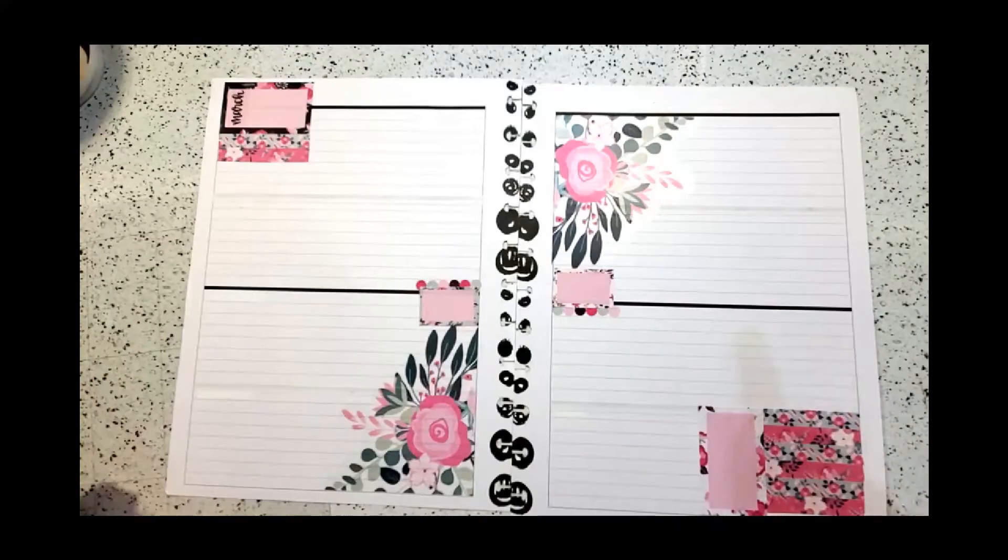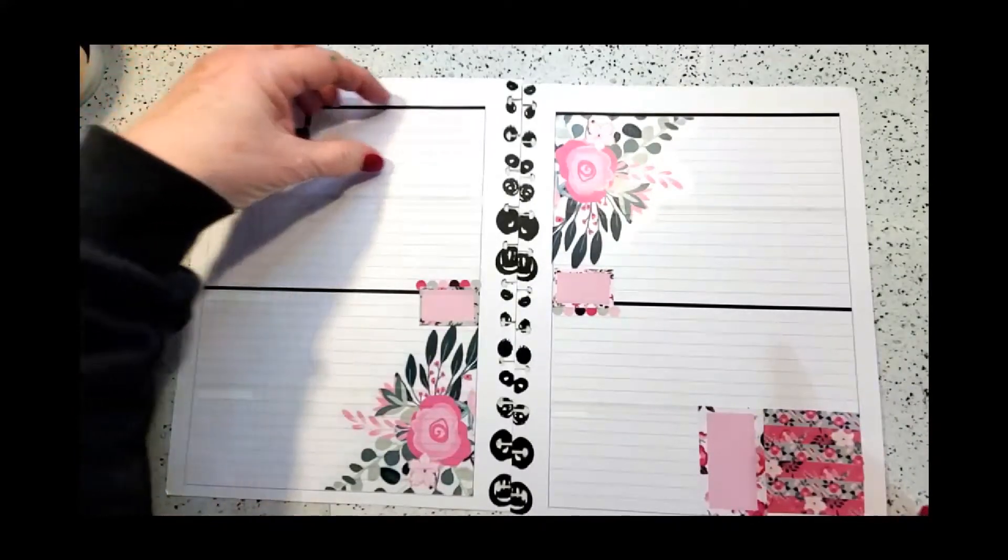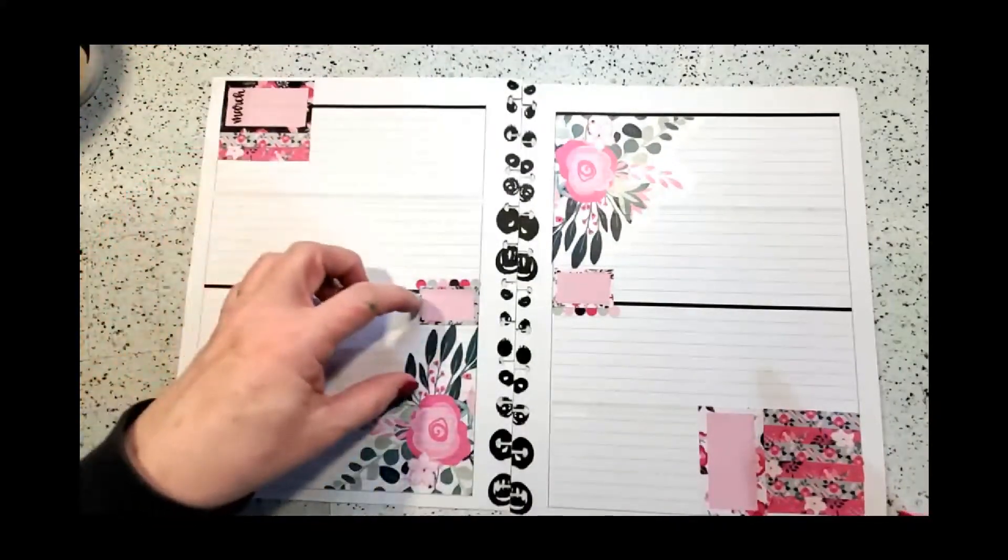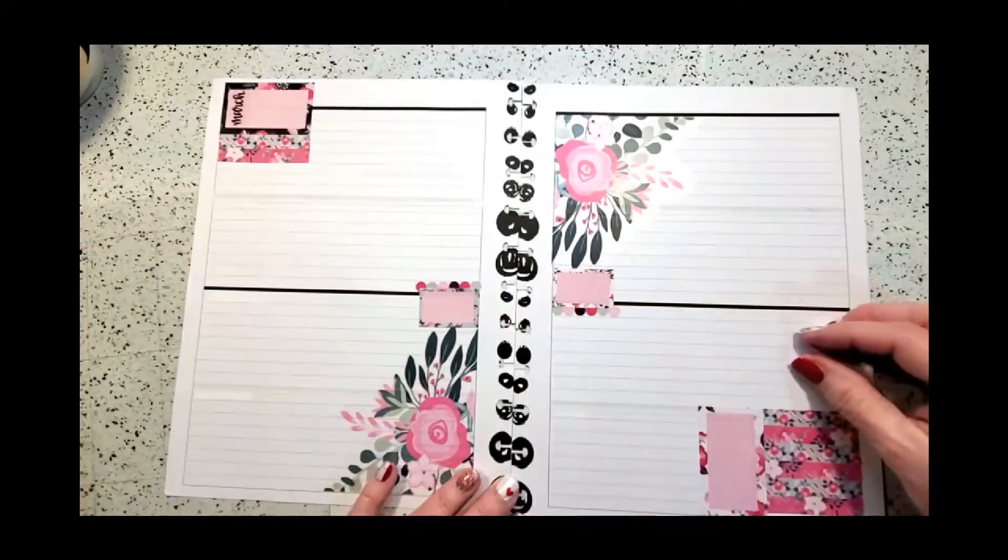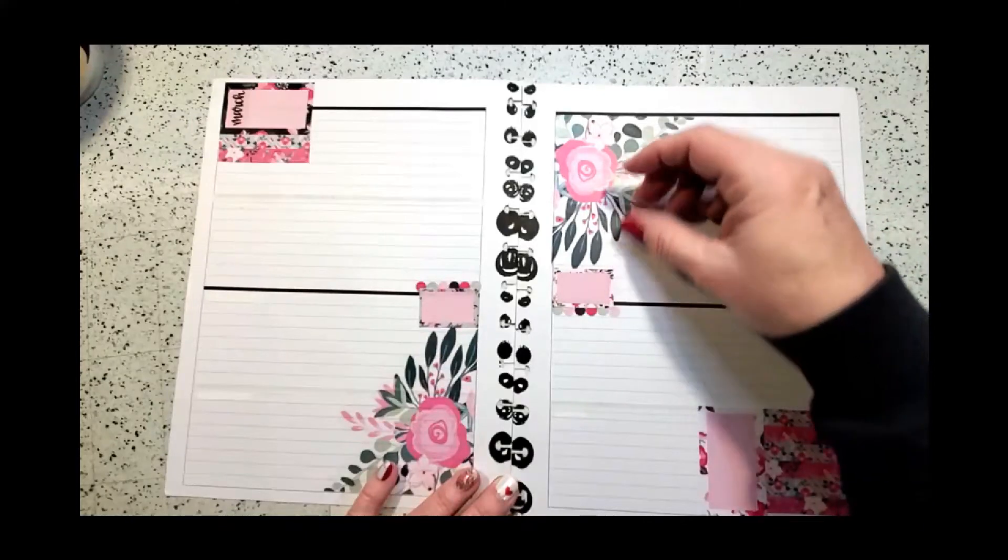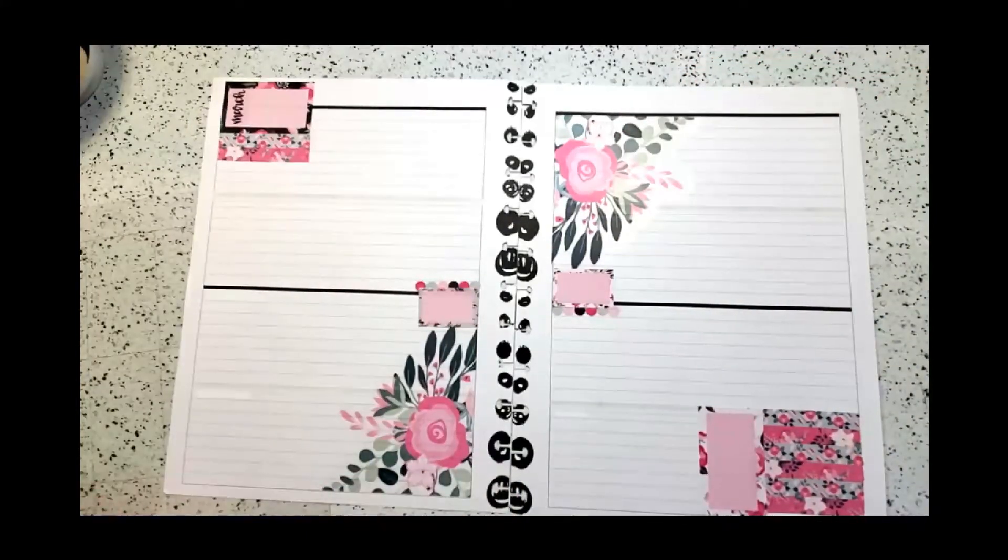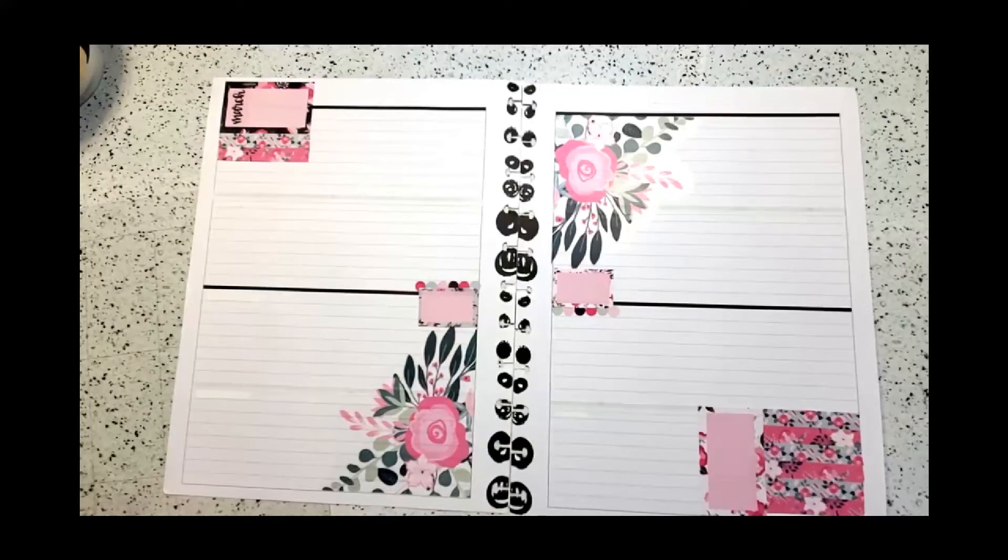I'm going to do this one a little bit differently. We're going to go across for the verse and journal underneath, across for the verse, journal underneath, across for the verse, journal on top, across for the verse and journal on top. So it's going to look really cute when it's all said and done.